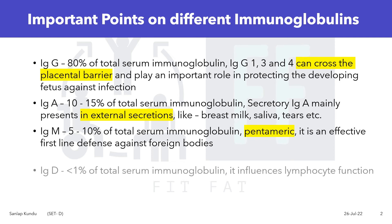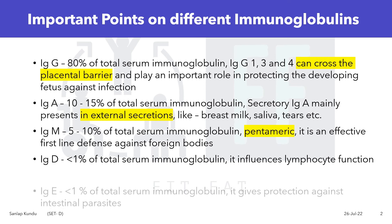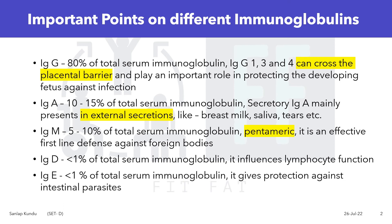IgD constitutes less than 1% of the total serum immunoglobulin and influences lymphocyte function. IgE also constitutes less than 1% of total serum immunoglobulin and gives protection against intestinal parasites.